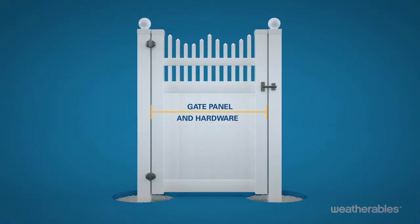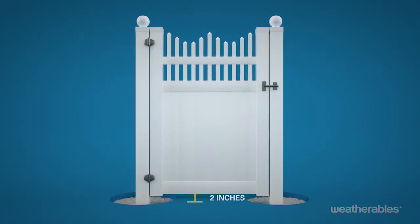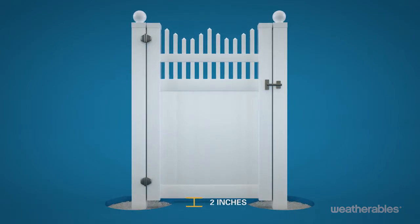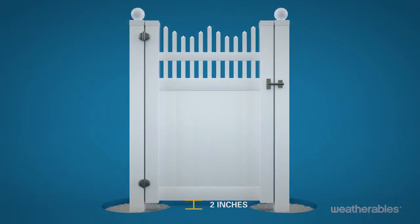You'll also want to allow a clearing of at least 2 inches between the bottom of the panel and the ground. This is a critical step since the gate will set the height for the rest of the fence.